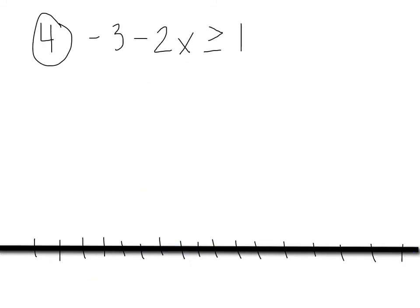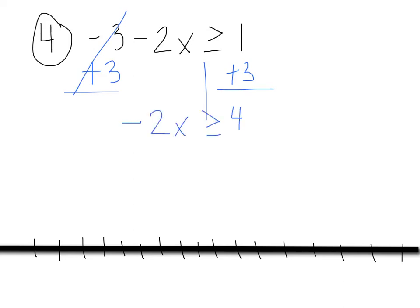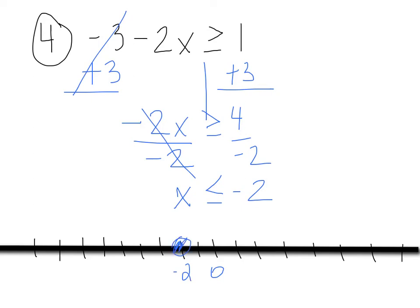Last one: negative 3 minus 2x is greater than or equal to 1. To move that negative 3, add 3 to the other side. Those go away, leaving negative 2x is greater than or equal to 4. We don't flip the sign yet because we haven't multiplied or divided by a negative. Now divide by negative 2 — ask yourself, is it a negative? Yes, so flip the sign. You get x is less than or equal to negative 2. Put 0 and negative 2 on the number line; it is equal, so use a closed dot. Numbers less than or equal to negative 2: shade to the left. Interval notation: negative infinity to negative 2, with a bracket at negative 2.